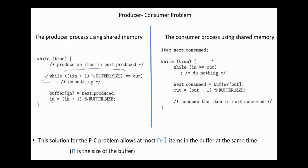In the consumer code, if the buffer is empty, then the consumer should wait. Otherwise, an item is consumed from the buffer into next consumed, and out is incremented by one mod buffer size. This solution for the producer-consumer problem allows at most n minus one items in the buffer at the same time, where n is the buffer size.